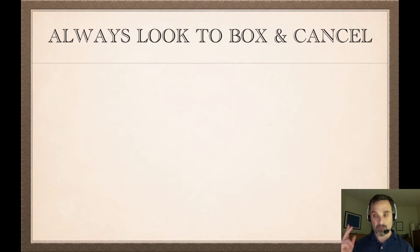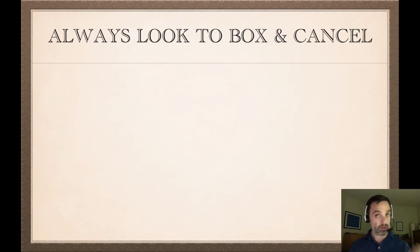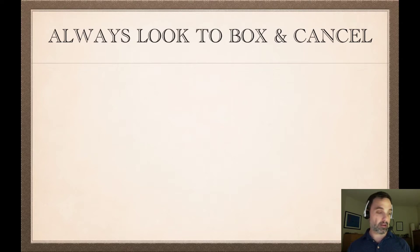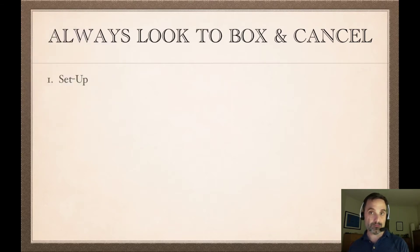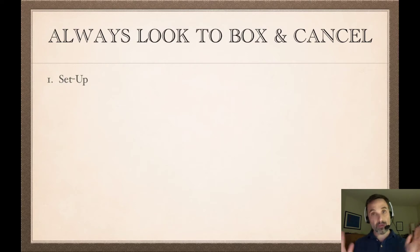Always be thinking: could I box and cancel directly — have I got what I want to show? Can I box and cancel indirectly because I've got a contradiction? Or could I box and cancel conditionally if I have the consequent? Okay, so that said — three stages of derivation construction.